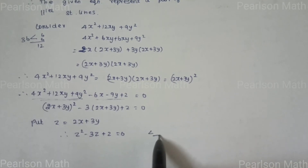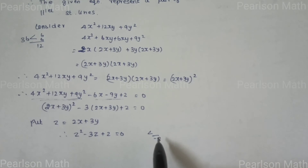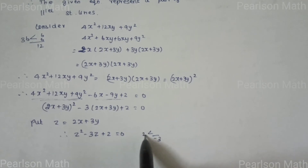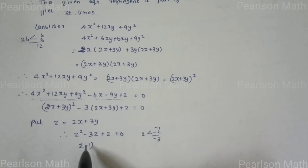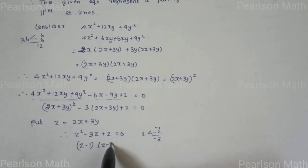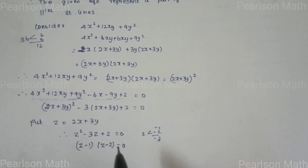Now we factorize z² - 3z + 2 = 0. The factors of 2 that add to -3 are -1 and -2. So (z - 1)(z - 2) = 0.